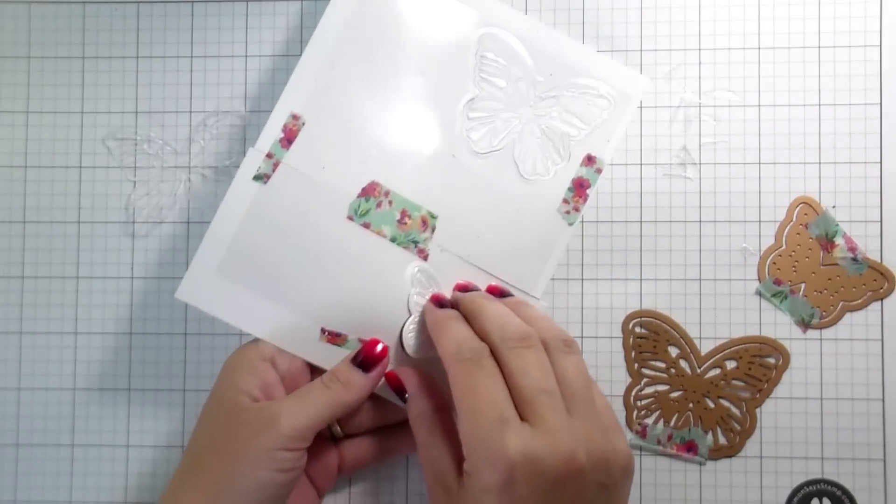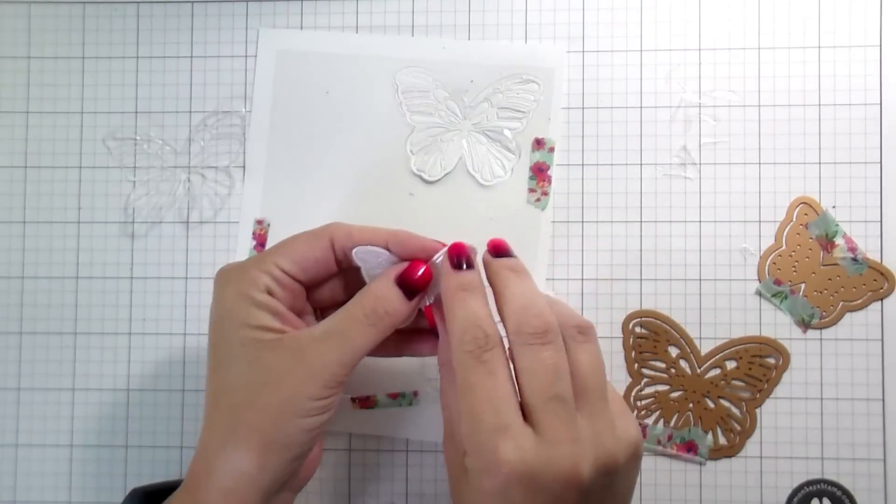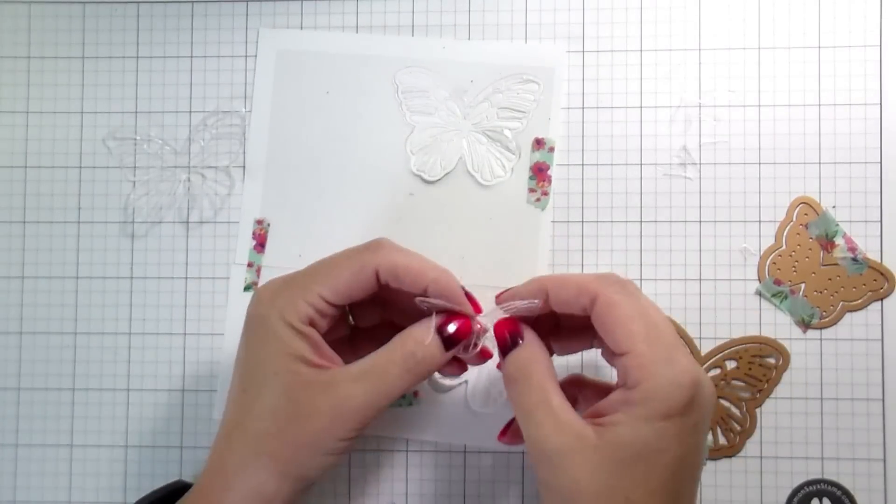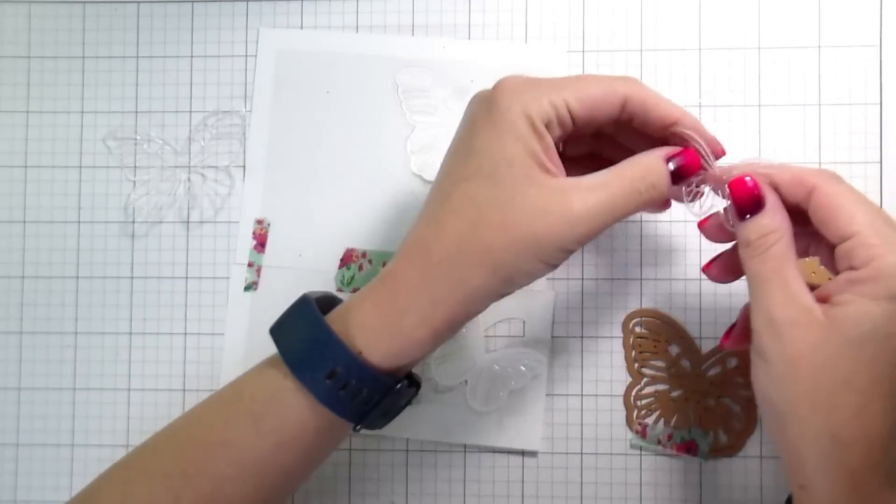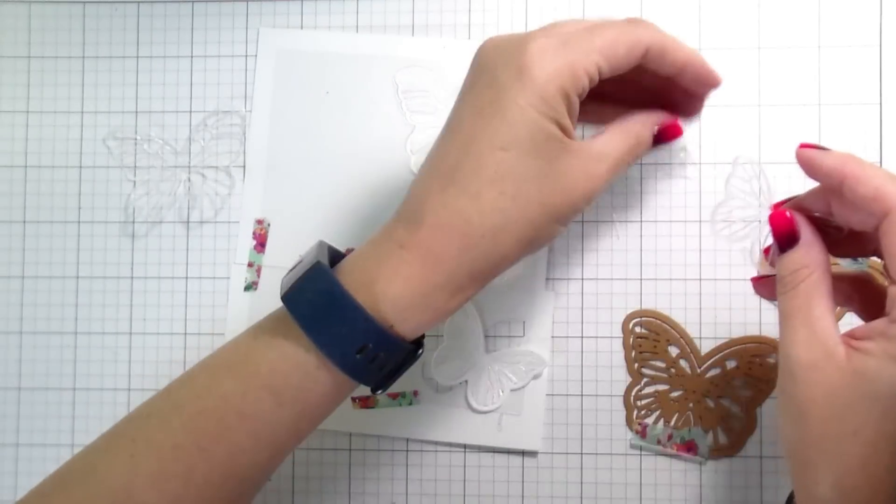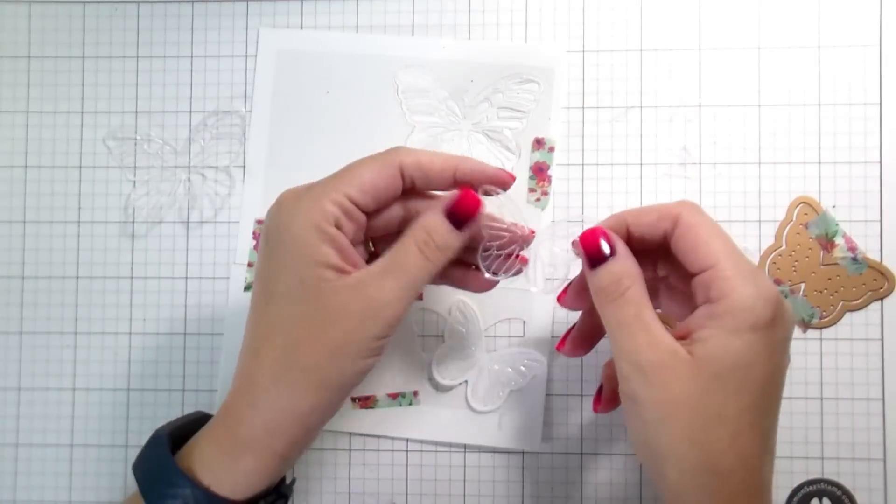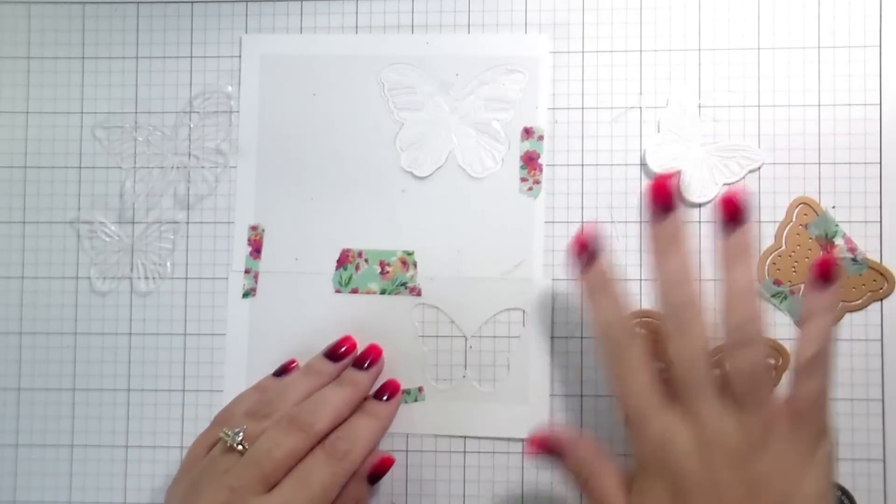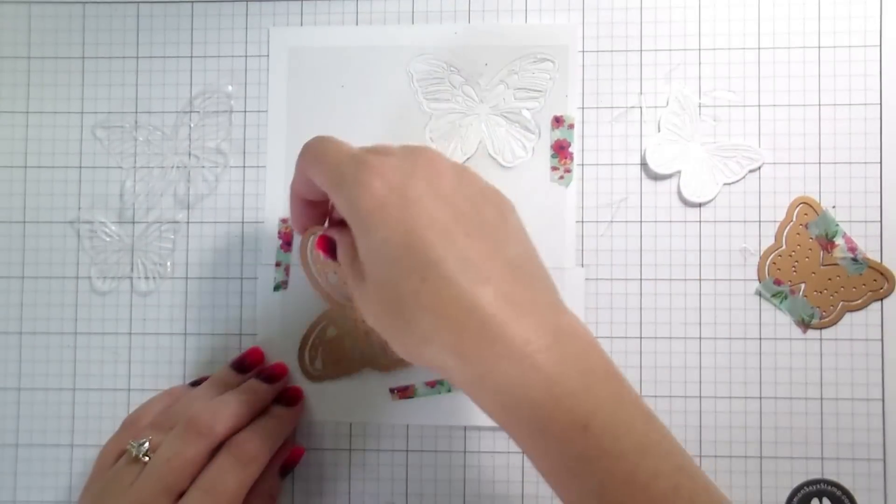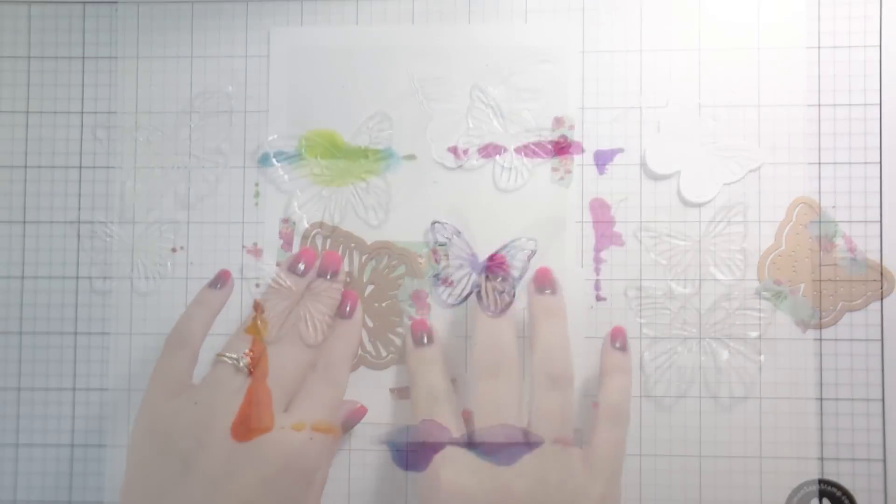That's my advice to you when doing the die cutting on acetate. Again, if you have a thicker acetate, if you have a heat resistant acetate, you might have to come up with your own kind of sandwich. But as a jumping off point, this is what worked for me. Now I'm going to continue to cut out several of these just plain clear butterflies, and then I'm going to add the alcohol color to them.